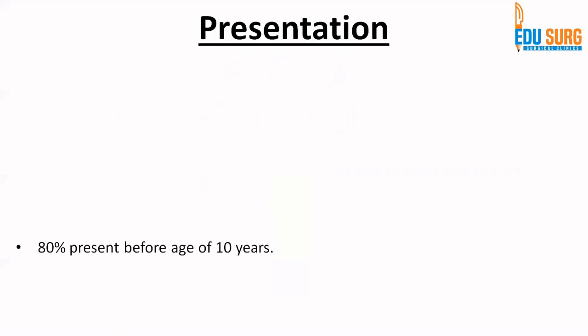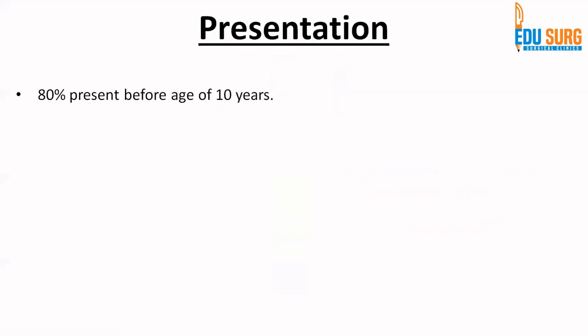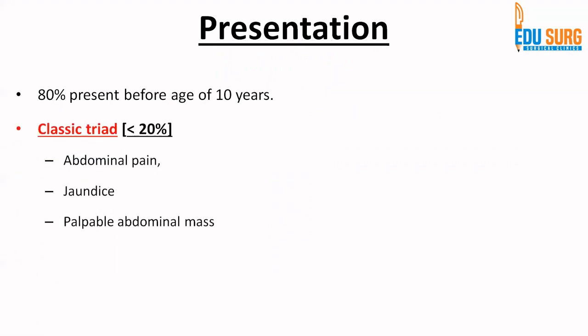Clinical presentation: 80% of patients present before the age of 10 years, so it is more common in childhood. The classic triad of choledocal cyst — a very commonly asked MCQ — is abdominal pain, jaundice, and palpable abdominal mass. However, this triad is seen in less than 20% of patients.